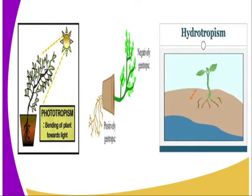As you can see from our diagrammatic representation, this is what we are calling phototropism. You can see the plumule or the shoot is growing towards the source of light, which is the sun — which in this case we are calling the stimulus. So that's why we say the shoot is positively phototropic, while the roots, because they are growing against the light, that is the stimulus, are negatively phototropic.